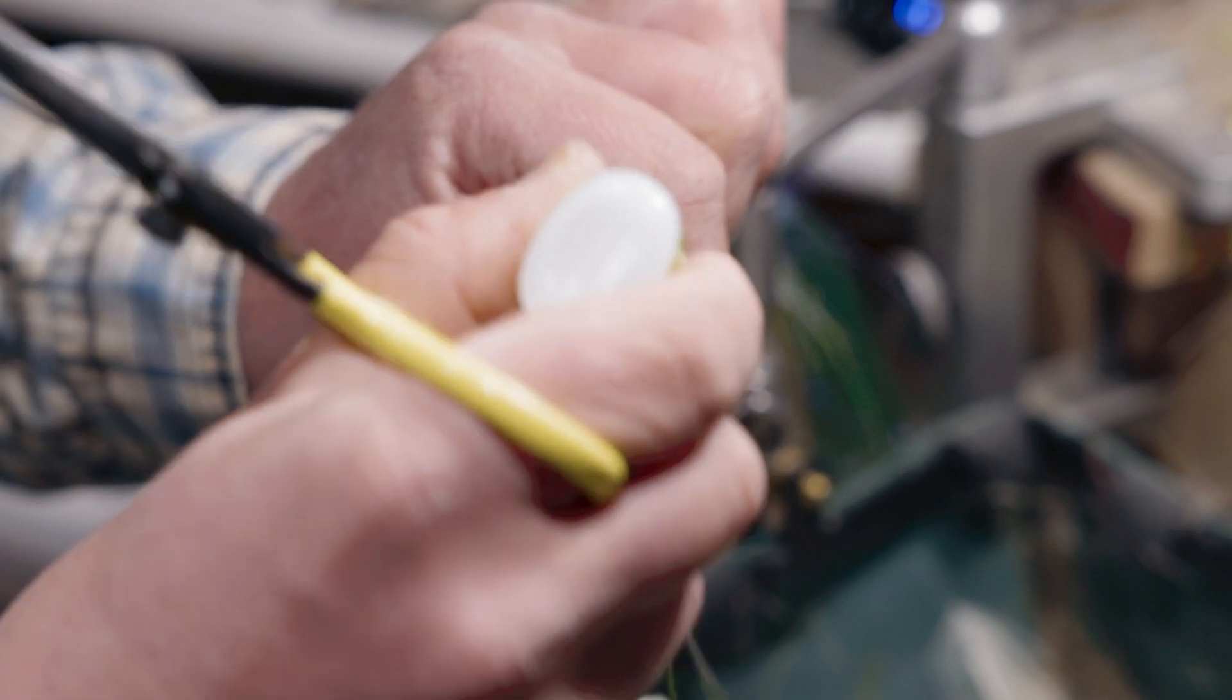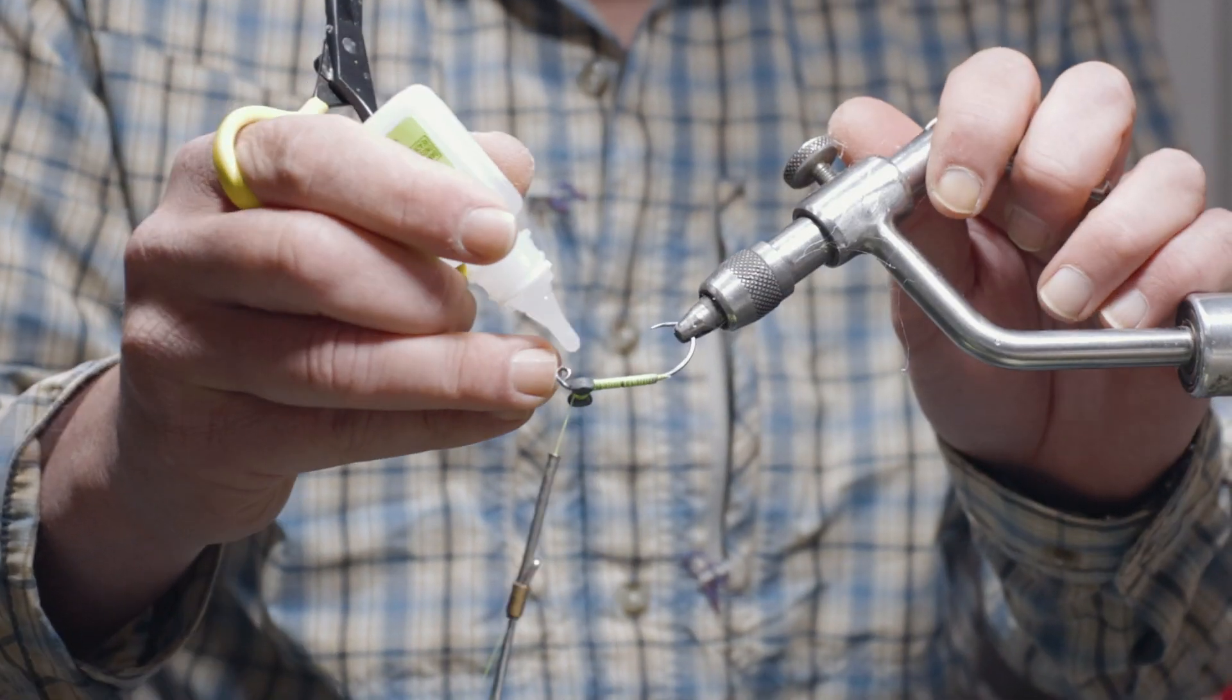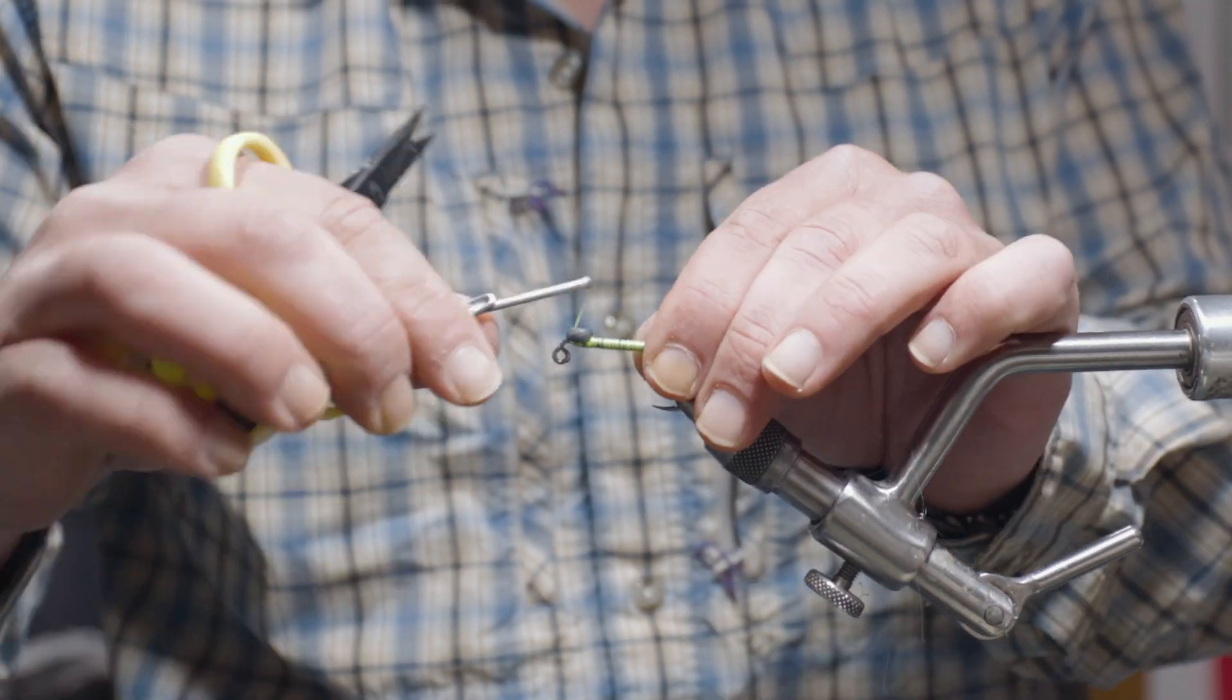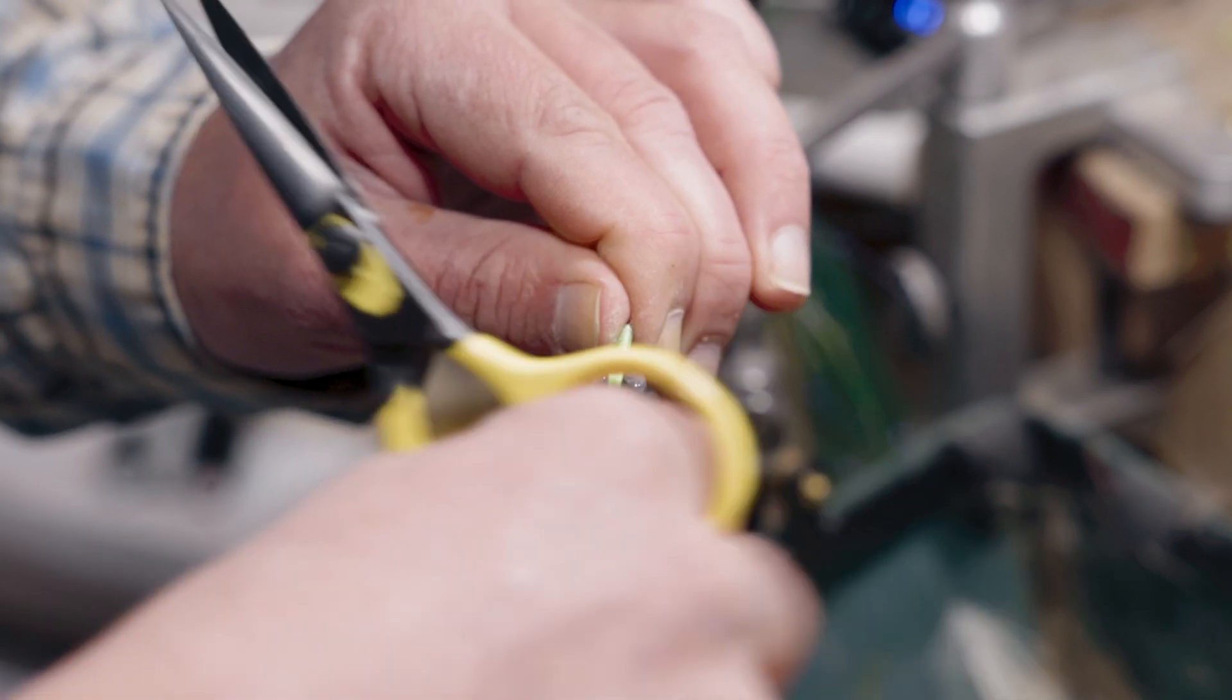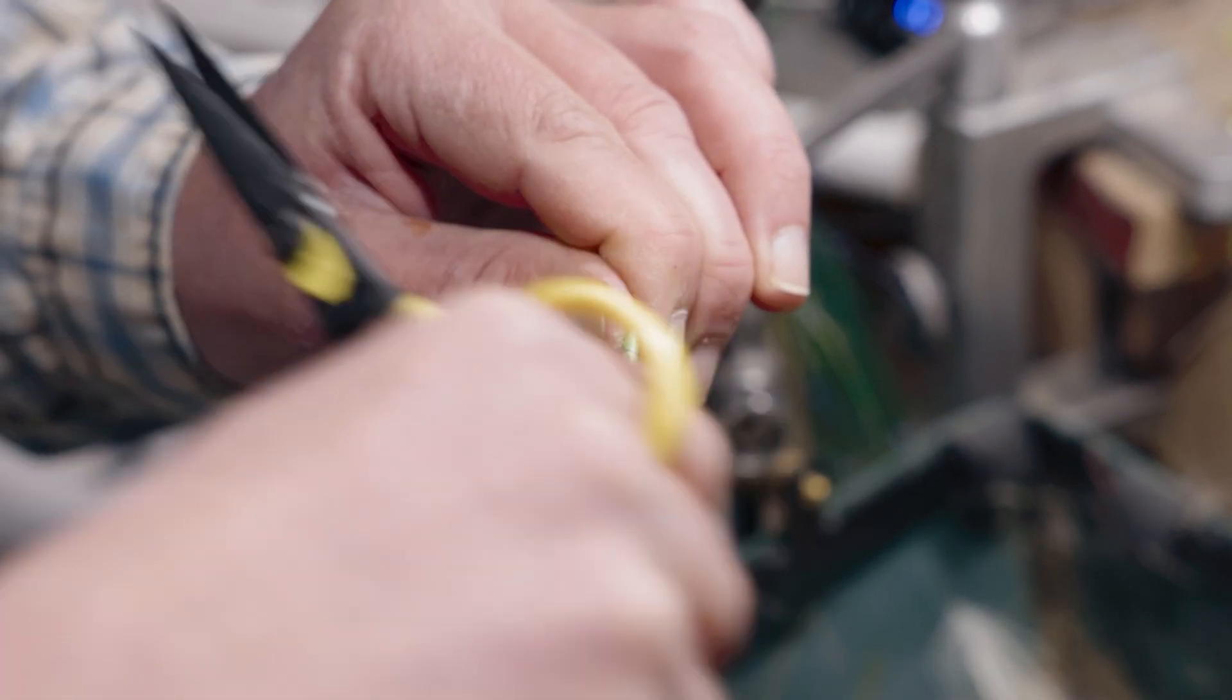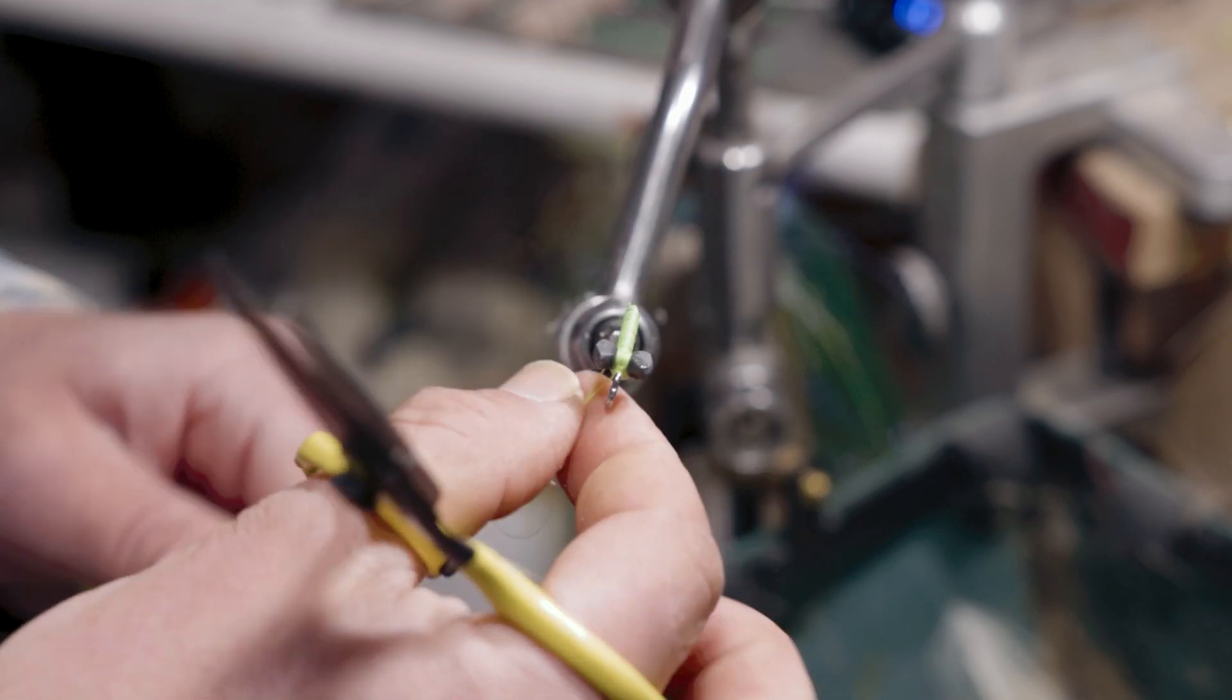And some more Zap-A-Gap. And then just build up some thread, really locking those lead eyes on there. Cover up that lead with another couple of layers of thread and we're just going to tie that off.